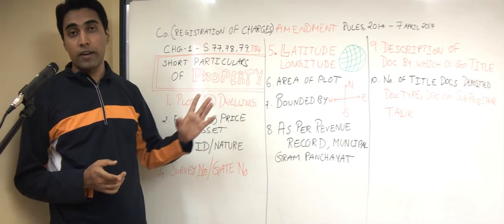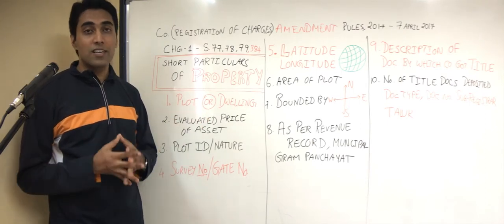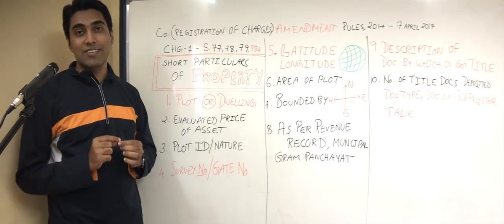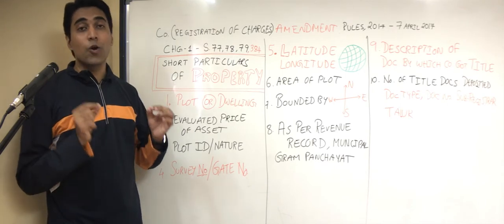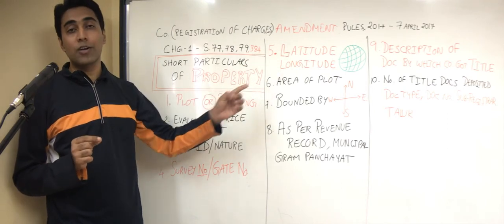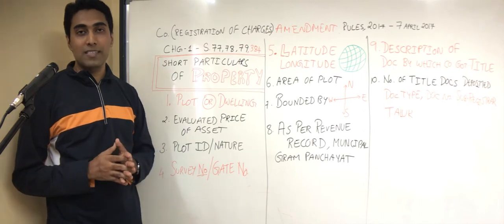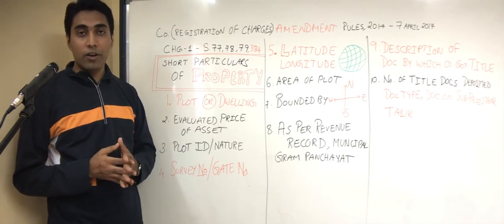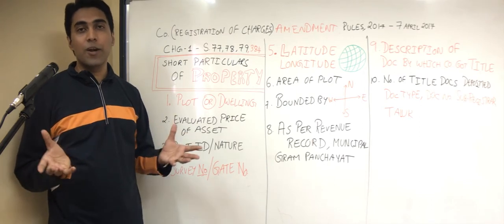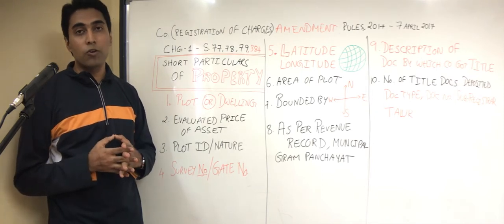Going back to a little geography — we all studied latitude and longitude in school. In Form CHG-1, they are even asking for the exact location of the property by disclosure of its latitude and longitude. In this way, there is no way the company can escape — once they give the latitude and longitude, it can only be one place on earth. This makes it very easy for the government to track and even inspect if needed.